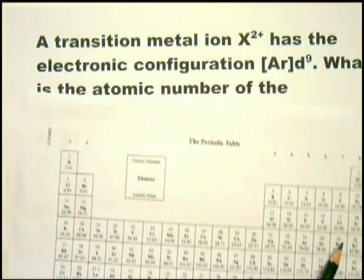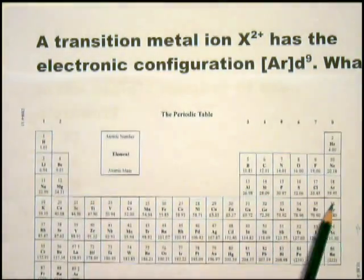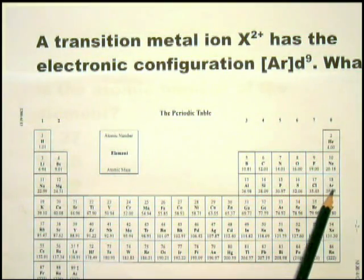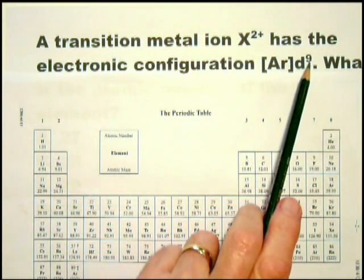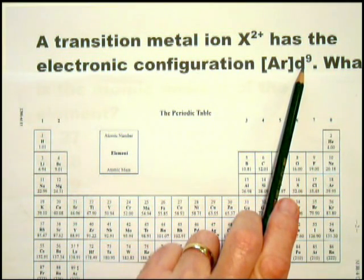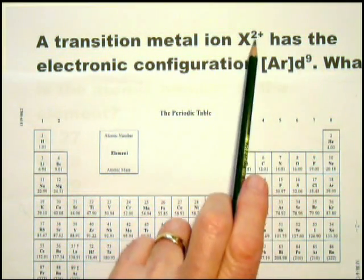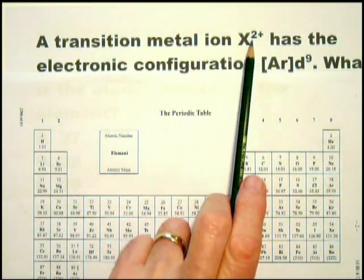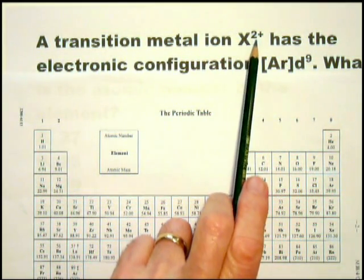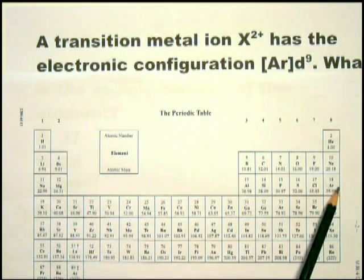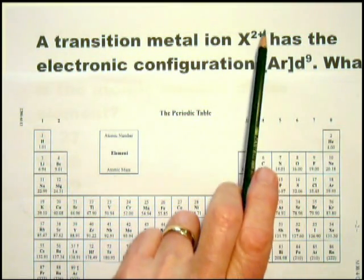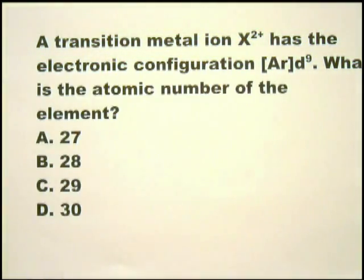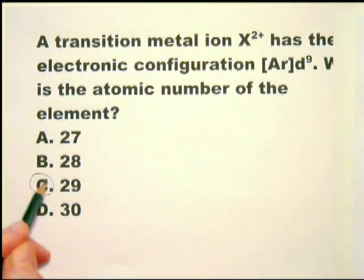Now, they do say the electronic configuration [Ar]d9. So you go immediately to Ar, and they're asking you for the atomic number. So you look at the atomic number of Ar, and that's 18. And you then add the 9 electrons from that, so that comes to 27. But that only gives you the ion. In order to go from the ion to the neutral atom, you need to add another 2 electrons. So it's 18 plus 9 plus 2. That's 29. So the answer is 29, and it's copper.